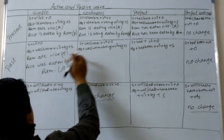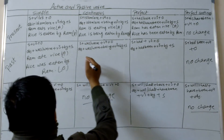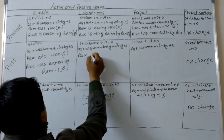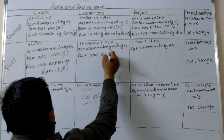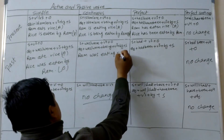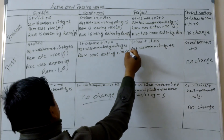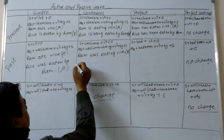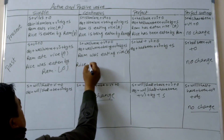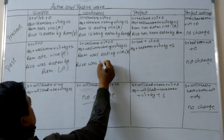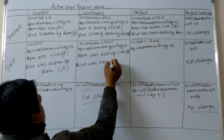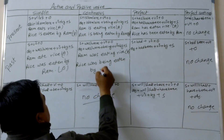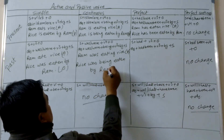Same sentence in past continuous tense. Ram was eating rice. This is active voice. Now let's change it to passive voice: rice was being eaten by Ram.